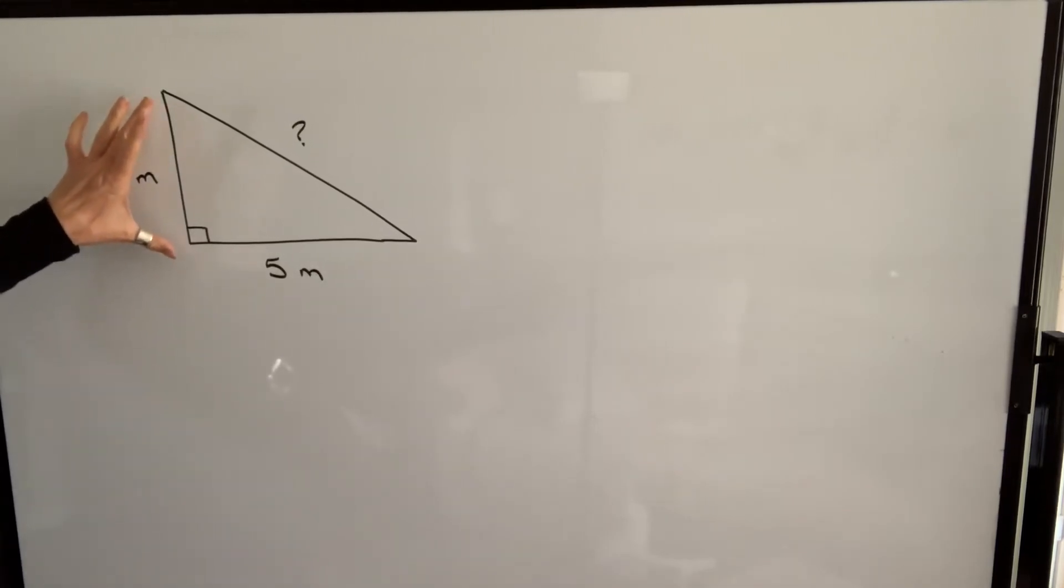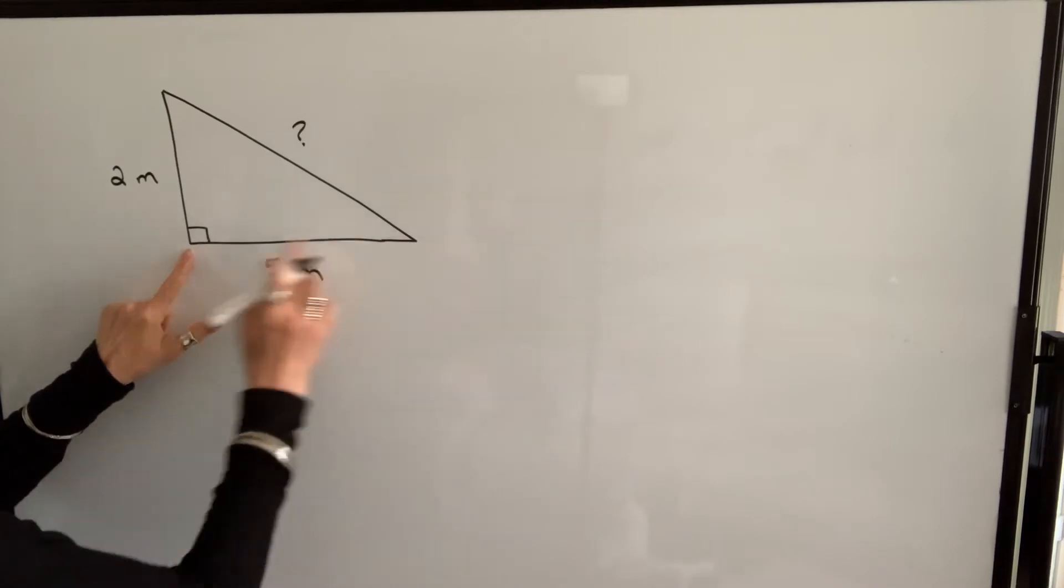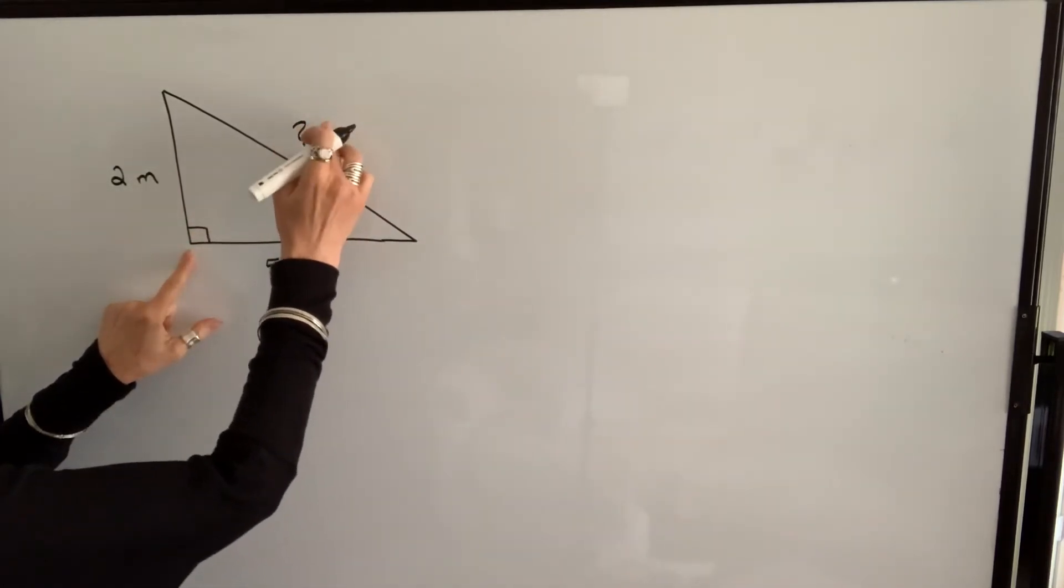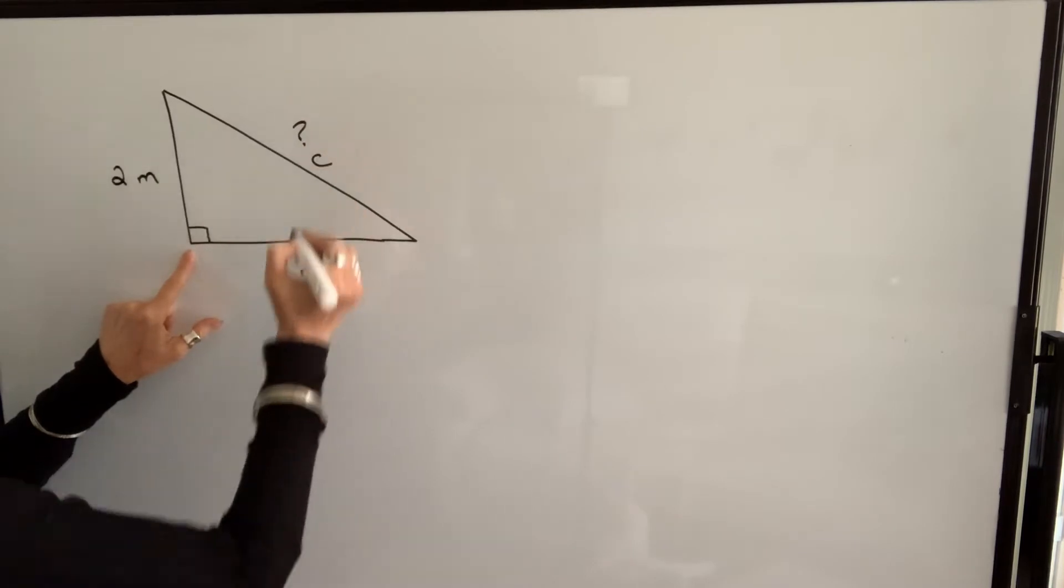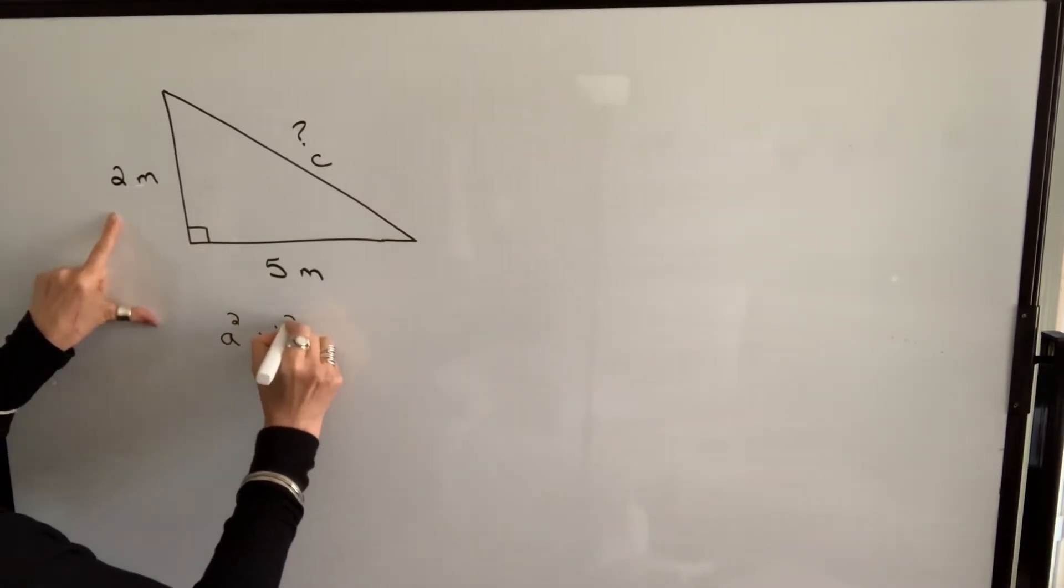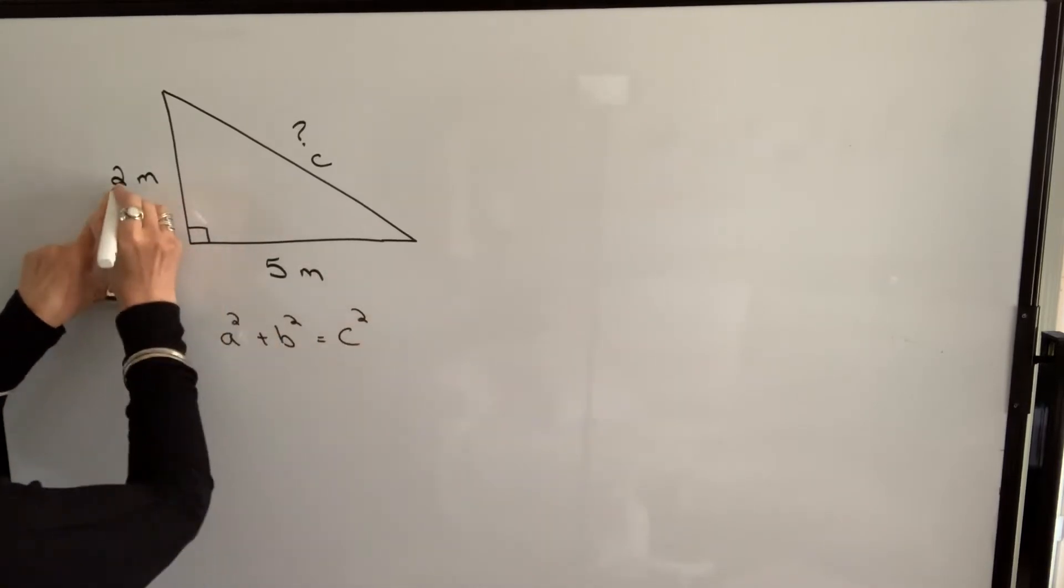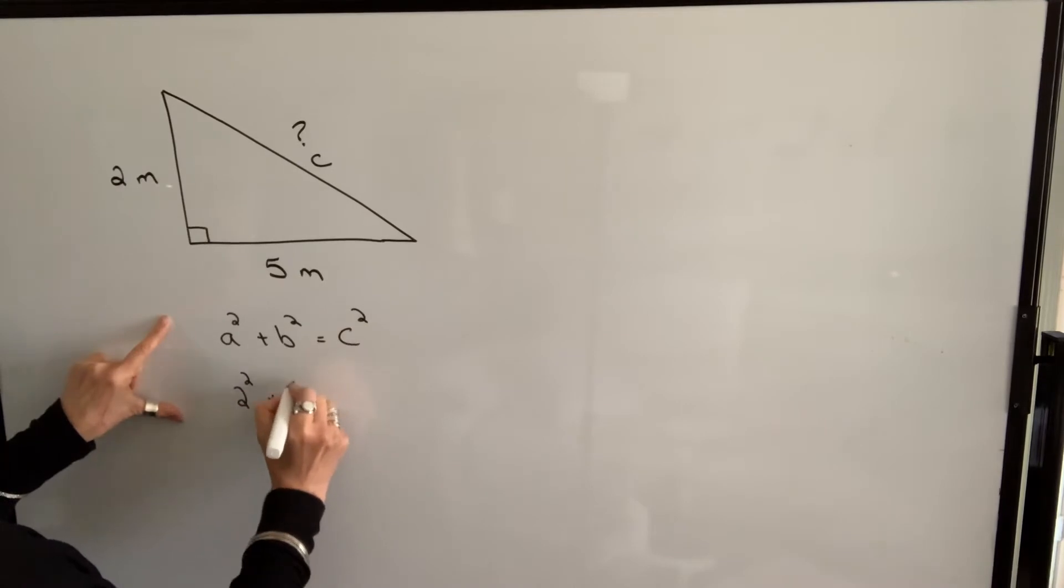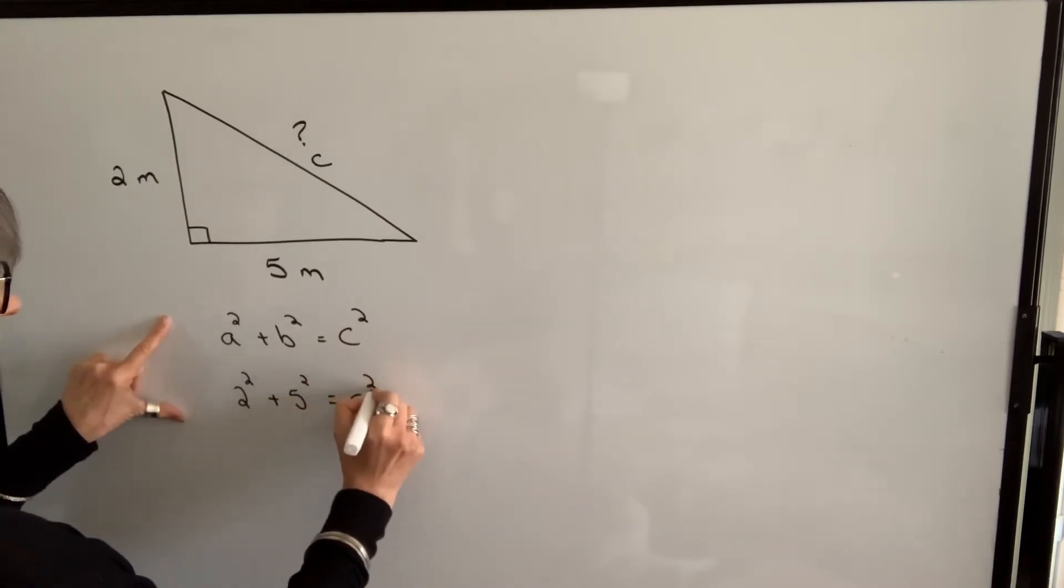In our first example, we know that this length is two meters. This length is five meters. We know that this is a right angle. So we want to find side c or question mark. So we're going to call this c. My formula says that a squared plus b squared will equal c squared. So I'm going to plug in a, which is 2, b, which is 5, and I'm going to find c.